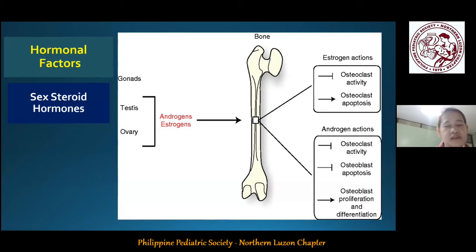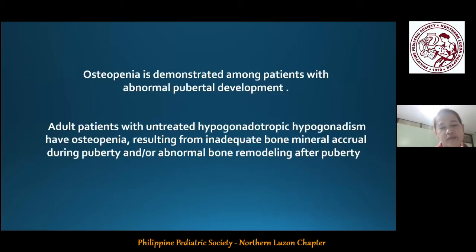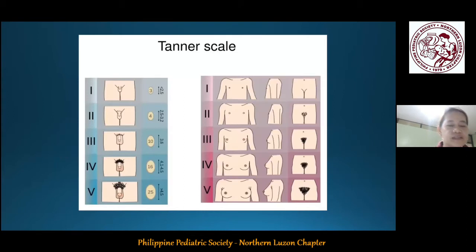The net result of these sex steroid hormone functions leads to an accrual in bone formation. Adult patients with untreated abnormal pubertal development have osteopenia or reduced bone mass compared with treated patients. The persistent osteopenia in adulthood results from inadequate bone mineral accrual during puberty and/or abnormal bone remodeling after puberty. Therefore, it is very vital that abnormal pubertal development must be recognized early and addressed properly to optimize the bone health of this group of children.